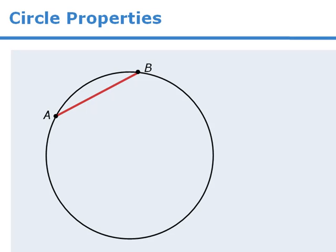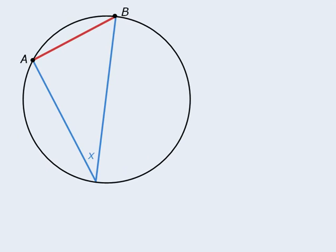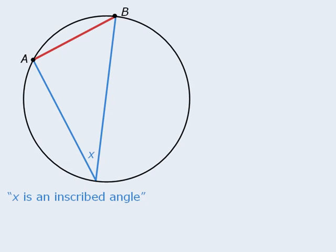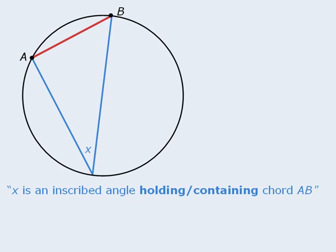As you have already seen, the red line segment here is called a chord. Now, if we have an angle such that its vertex lies on the circle, we call that angle an inscribed angle. So here we will say that angle X is an inscribed angle. To be more precise, we can say that angle X is an inscribed angle holding or containing chord AB. So if we imagine that the ends of the two line segments have hands, angle X can be thought of as holding chord AB.